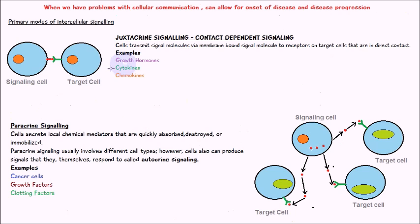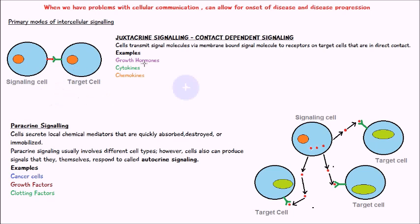Juxtacrine signaling is where cells transmit a signal molecule via a membrane-bound signal molecule to receptors on target cells, but only if those cells are in direct contact. If you look at this diagram on the left, you can see the signaling cell and the target cell are in very close proximity, allowing the signal to pass onto the receptor site — the signal molecule isn't moving, it's just bound onto the membrane.